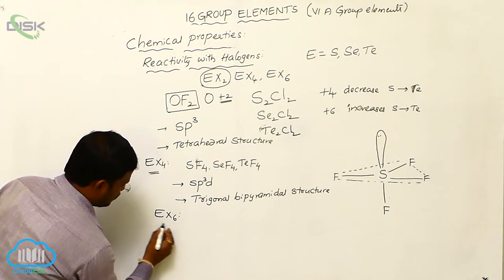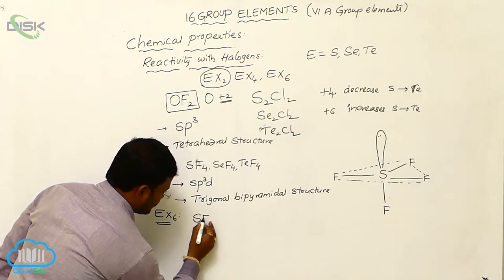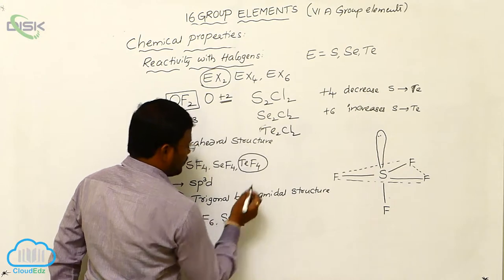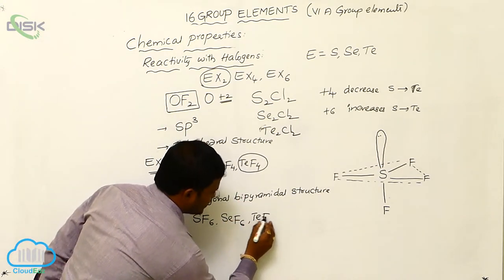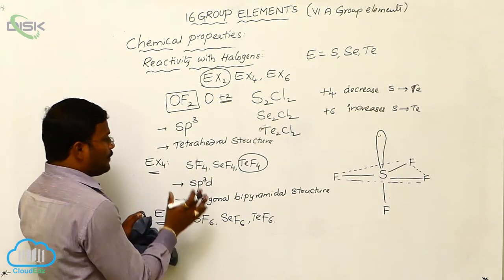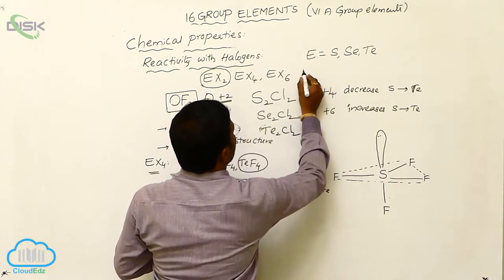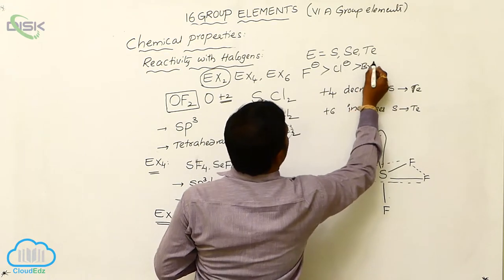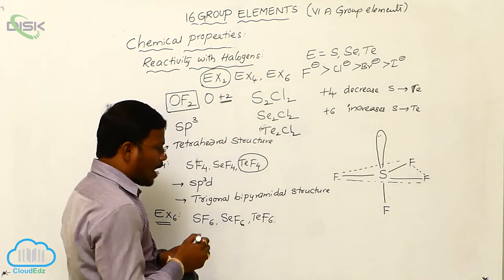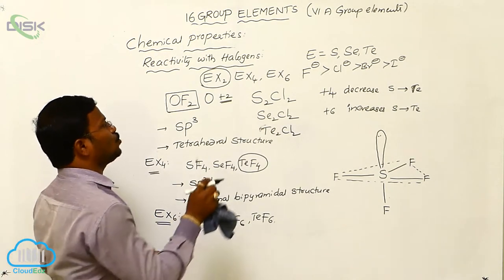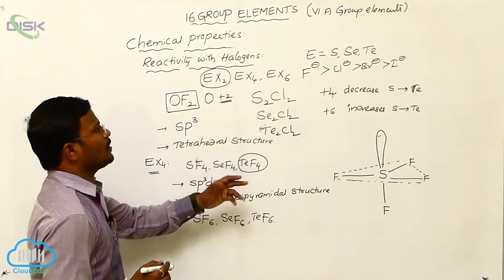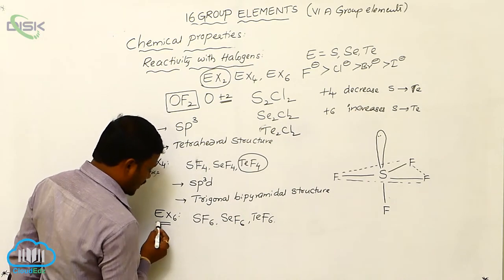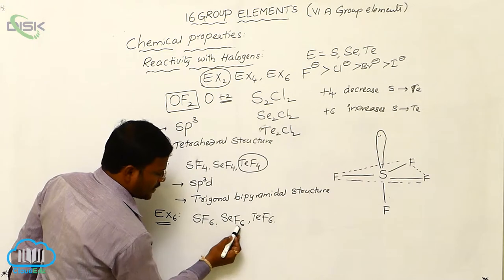For EX6 type halides: SF6 and SeF6 are the main compounds. Tellurium hexafluoride may exist but with less stability. When compared to other halogens, fluorides formed with Group 16 elements are more stable than chlorides, bromides, and iodides. This is why our discussion focuses on fluorine. In the EX6 category we have SF6, SeF6, and TeF6.